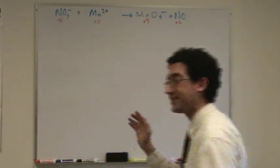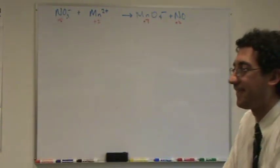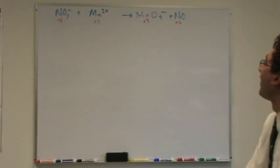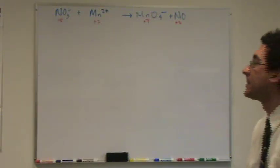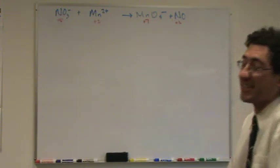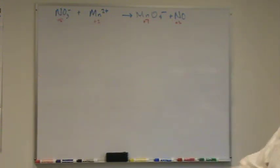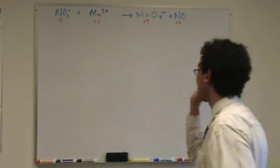Okay, so now let's see, what is the reducing agent? Manganese. That's right. It's the one that gets oxidized, so it has to be the reducing agent. Nitrogen got reduced, so it's called the oxidizing agent. Get that clear in your head somehow.